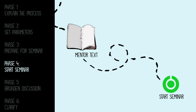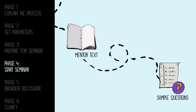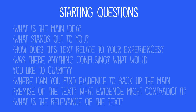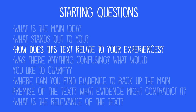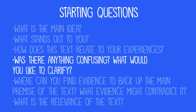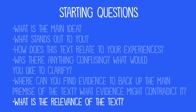In phase four, you start the Socratic seminar. You might have a series of sample questions or sentence stems for students to use as they get started. If you start with a mentor text, some questions you might ask include: What is the main idea? What stands out to you? How does this text relate to your experiences? Was there anything confusing? What would you like to clarify? Where can you find evidence to back up the main premise? And what evidence might contradict it? What is the relevance of the text?